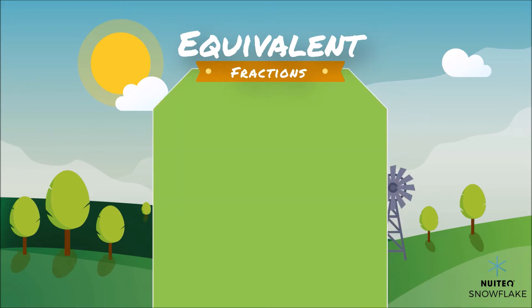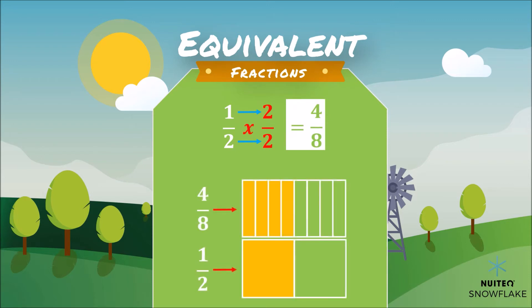Here is why those fractions are really the same. If we multiply 1 half by 2 over 2, the result is 4 over 8. And visually it looks like this. Remember that the denominator tells us how many parts the model has, and the numerator tells us how many parts are shaded in the model.